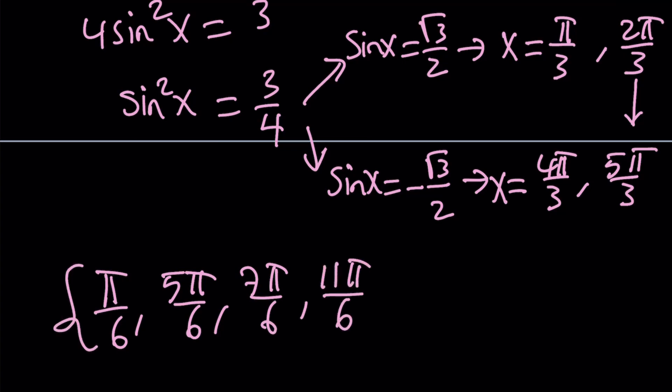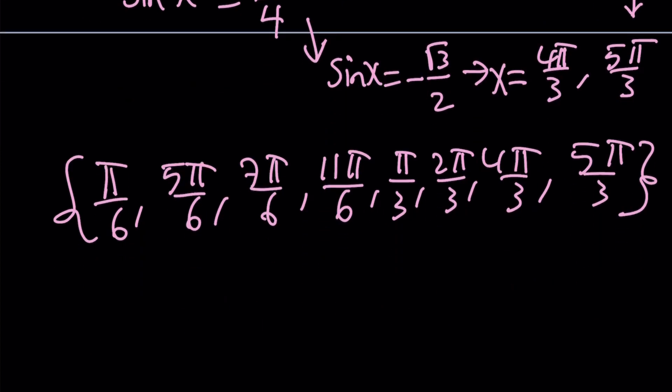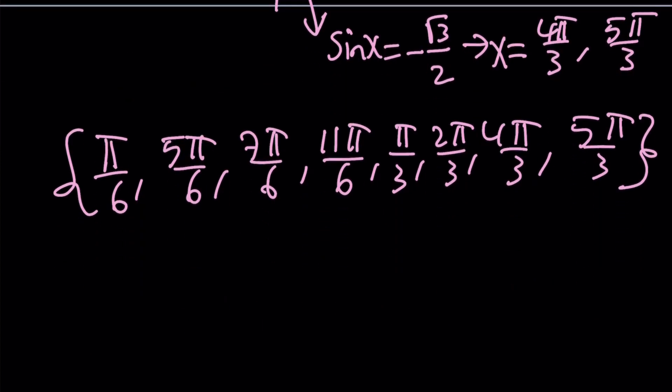And then we got π/3, 2π/3, 4π/3, and 5π/3. Of course you can add multiples of 2π to this all the time and just get general solutions. For example, x can also be written as π/6 plus n times 2π, where n is an integer. So if you add 2π to this, you're going to get 13π/6, and so on and so forth. You can do it for all these solutions.